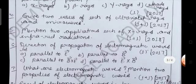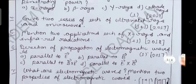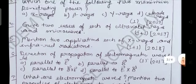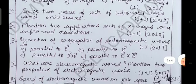Give two uses of each of ultraviolet rays and microwaves, which was asked in 2019. And here you can see its marking scheme one plus one - one for ultraviolet rays and one for microwaves.